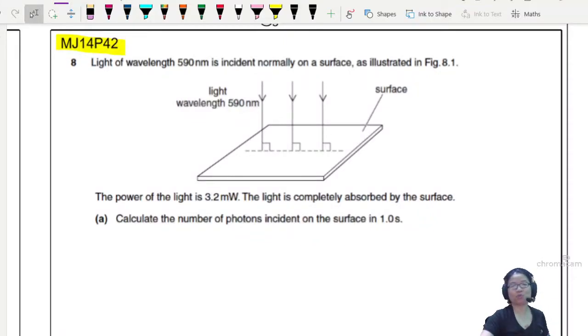This is May June 14 paper 42 about wave-particle duality. Let's read the question. Light of wavelength 590 nanometer, so we're gonna have light coming, incoming this way, incident normally on the surface.